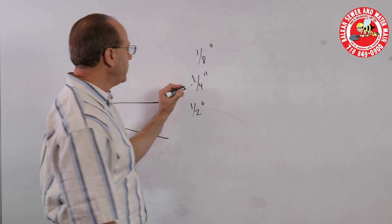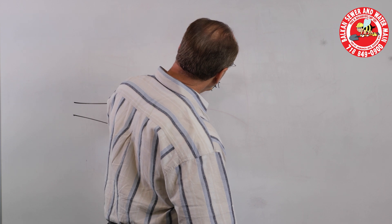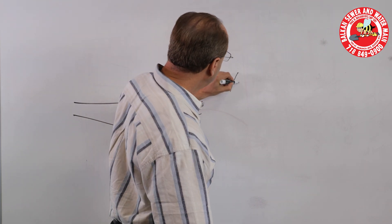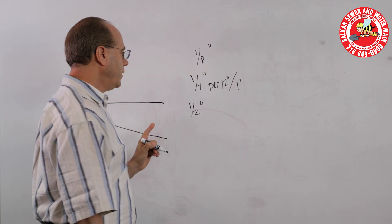But a quarter of an inch of what? So it's a quarter of an inch per 12 inches, or of course, that's per foot.